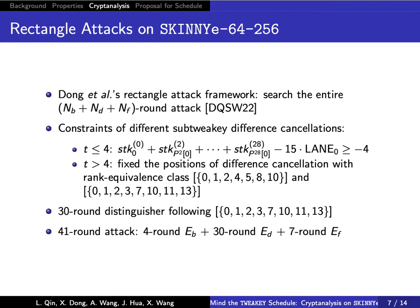We take an automatic MILP model, adding the difference cancellation behaviors and searching the whole rectangle attack. In the 30-round distinguishing phase we found there are 8 cancellations every 30 rounds. Then we give a 41-round rectangle attack.